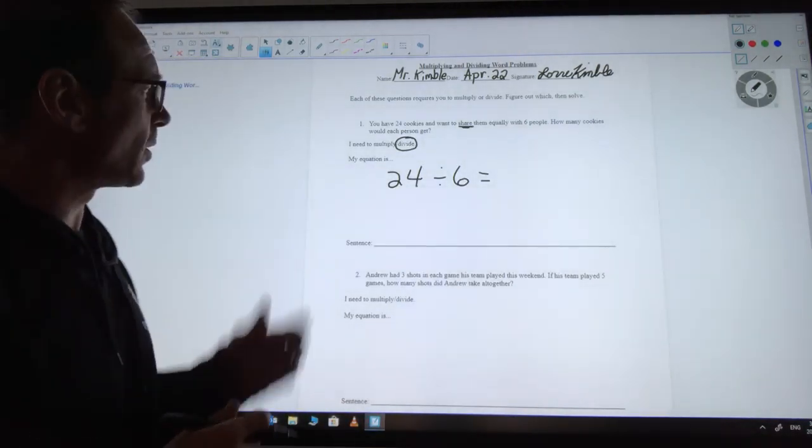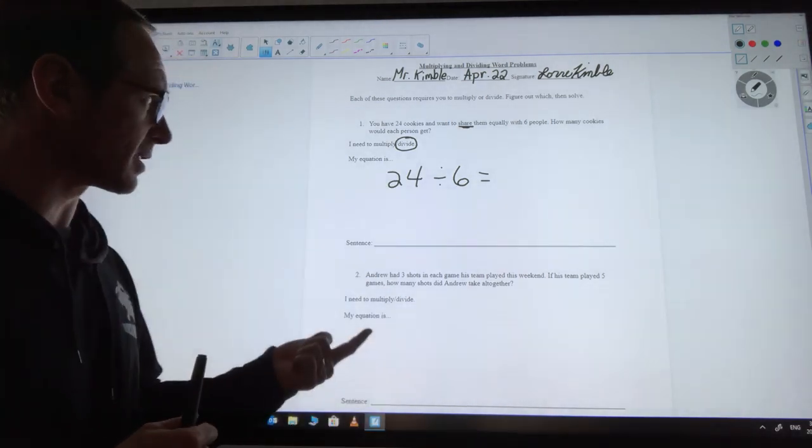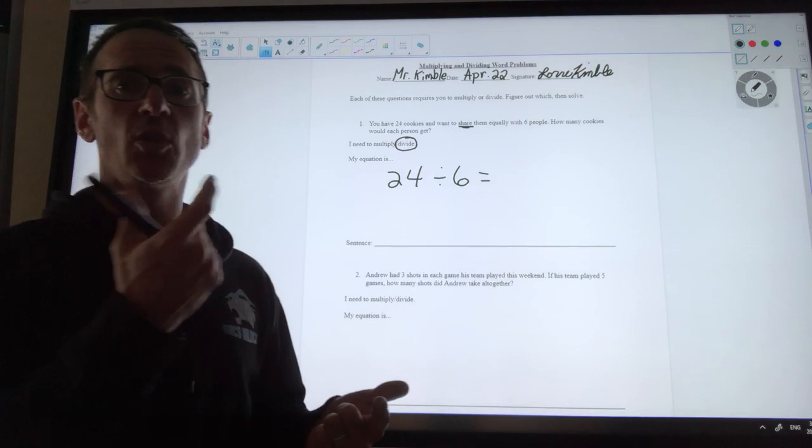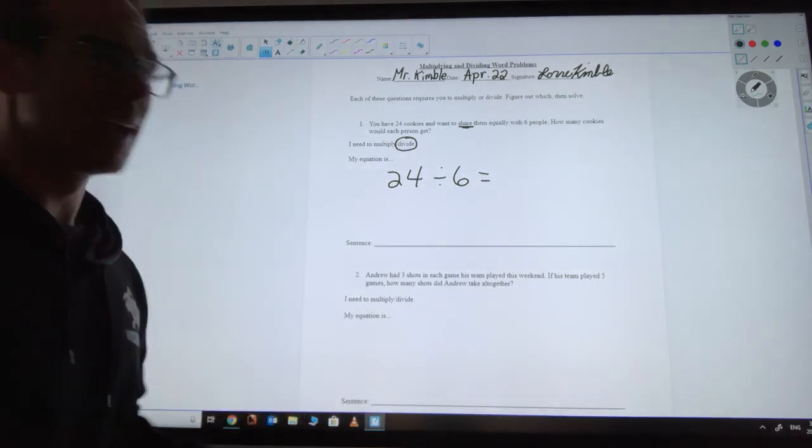Now my next step is to figure out what 24 divided by 6 is. So if I think, well I know that one six is six, and two sixes is 12. Oh, that means two more sixes will also be 12. 12 plus 12 is 24, so all together I have four sixes. So 24 divided by 6 is equal to 4.